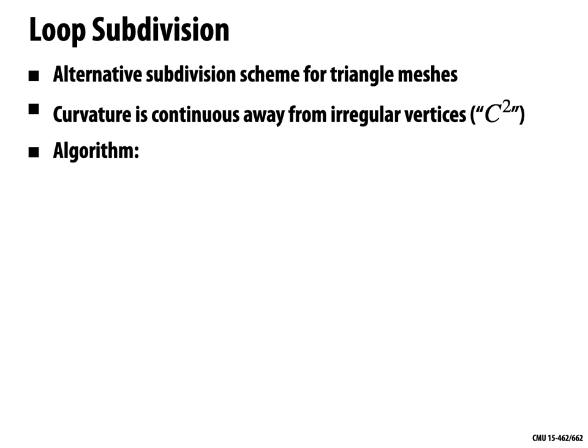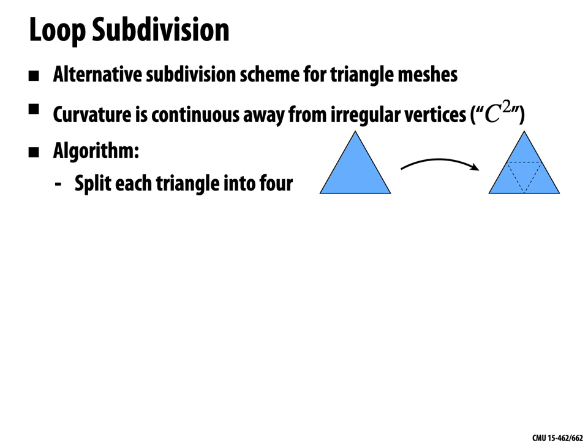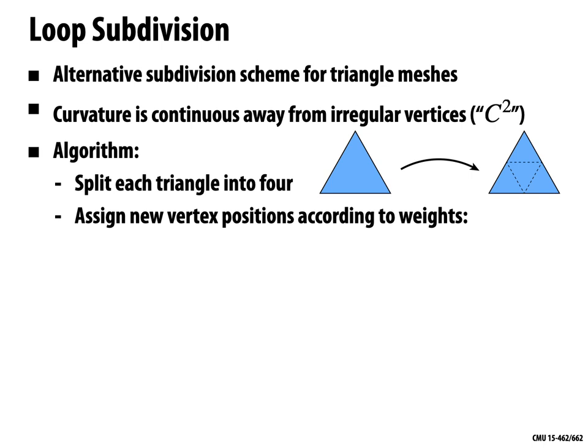In Loop subdivision, we split each triangle into four by inserting vertices on the edges, then assign new vertex positions using specific weights. New vertices on each edge are placed at a weighted average of the four vertices from the two adjacent triangles: the two opposite vertices get weight 1/8 each, and the two endpoints get weight 3/8 each. Note that 1/8 + 1/8 + 3/8 + 3/8 = 1, so the new vertex is a convex combination of neighboring vertices.